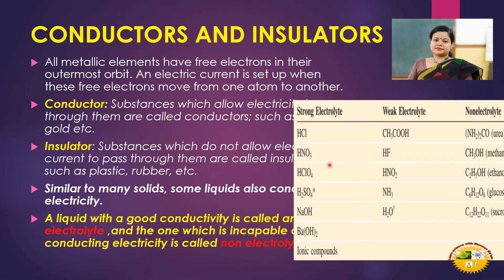Here is a list of electrolytes. Some strong electrolytes — very good conductors of electricity — include hydrochloric acid, nitric acid, perchloric acid, sulfuric acid, sodium hydroxide, barium hydroxide, and ionic compounds. Weak electrolytes include weak bases, weak acids like acetic acid, hydrogen fluoride, ammonia, and water. Non-electrolytes include urea, methane, ethanol, glucose, and sucrose. Solutions of non-electrolytes cannot conduct electricity.